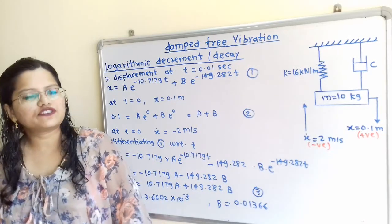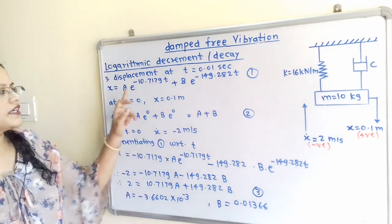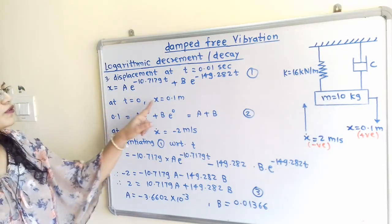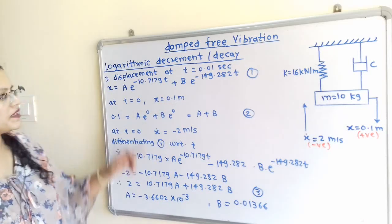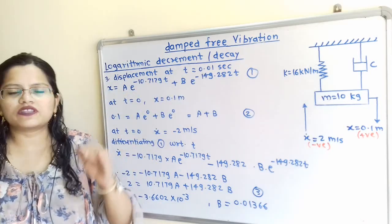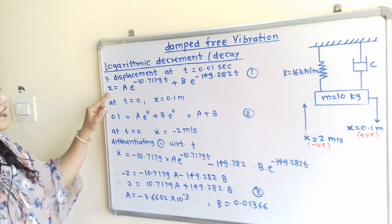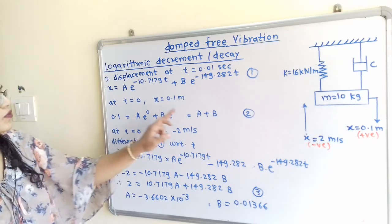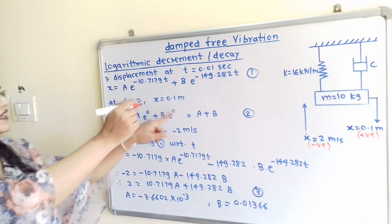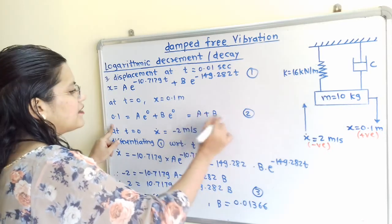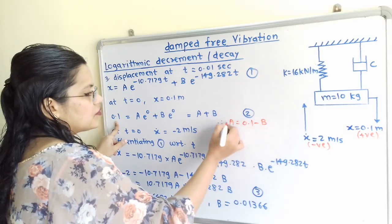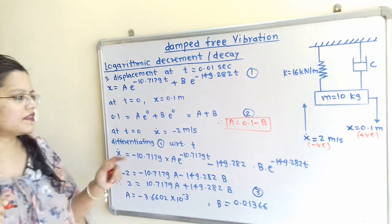We write the equation of motion x = A·e^(S1·t) + B·e^(S2·t) as equation number 1. When t equals 0 and x equals 0.1 meter, each exponential becomes e^0 which equals 1, so we get: 0.1 = A + B. This is equation number 2. We can also express A in terms of B: therefore A = 0.1 − B.